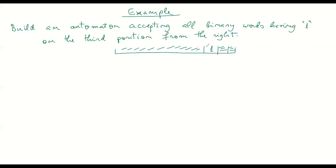Here is how to think about this with non-deterministic automata. I start reading the input word in the initial state, which I'll call p. In state p I might have to read many letters before I reach the third-from-the-right position. So I stay in state p reading all letters 0 and 1, waiting until I realize I am at the third position from the right, at which point I do something else. This is the 'waiting state' that handles the preliminary part.